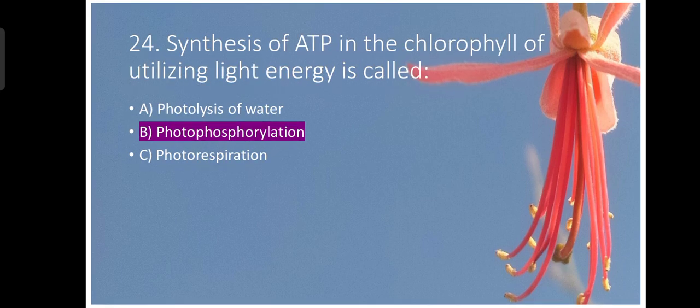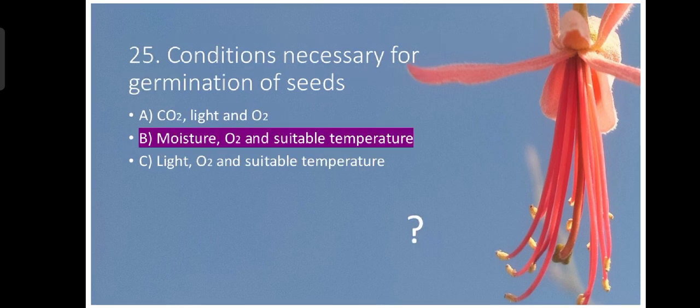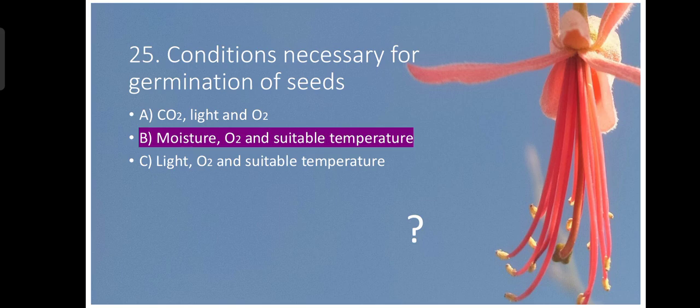Question number twenty-four. Synthesis of ATP in the chloroplast utilizing light energy is called photophosphorylation. Formation of ATP is known as photophosphorylation. Conditions necessary for germination of seeds. And this is also there is also uncertainty in this question. Some seeds also require light. So the option B and C both becomes correct. So you people may also comment for the question number twenty-five.